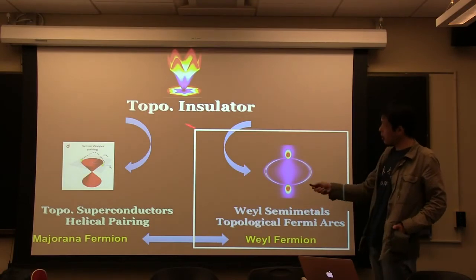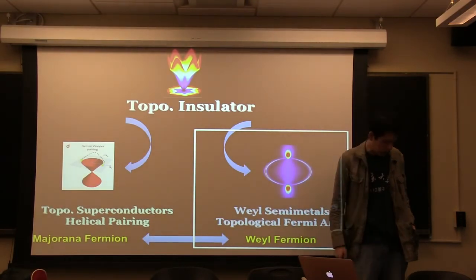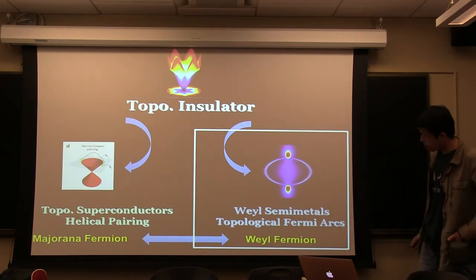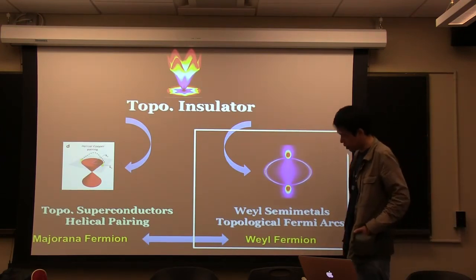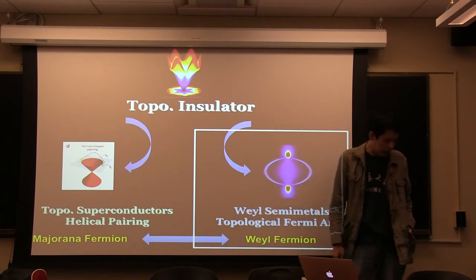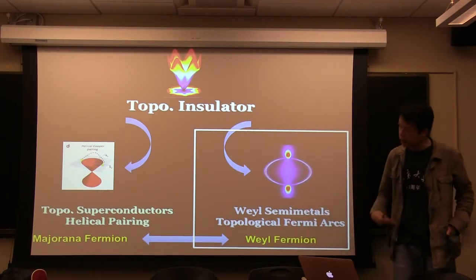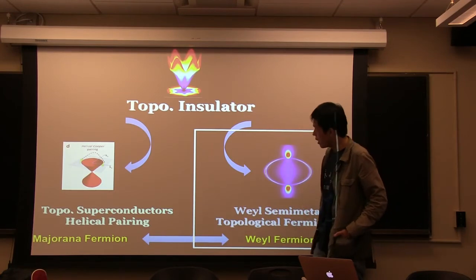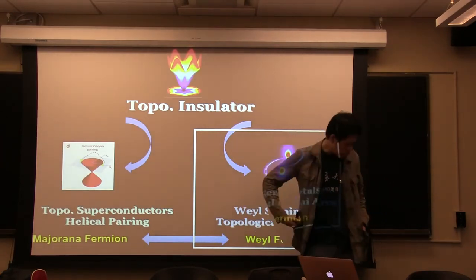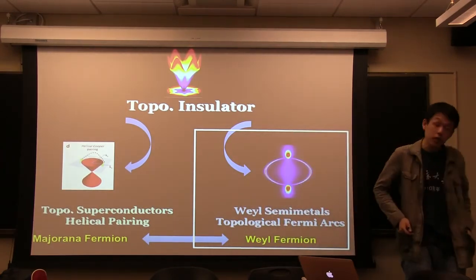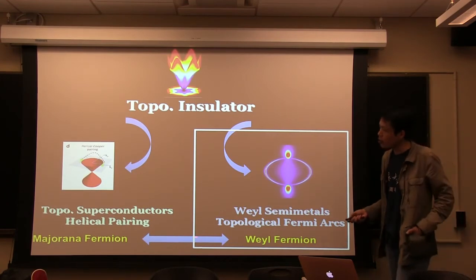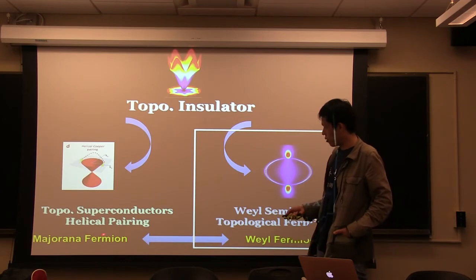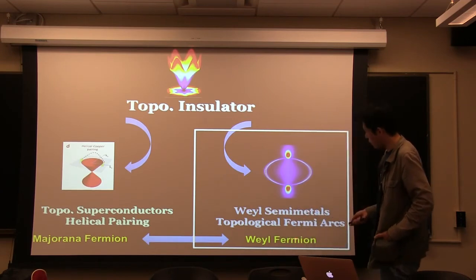Topological insulators in 3D were discovered around 2007 and 2008, and it is now well known that on the surface they have Dirac fermions which are spin-momentum locked Dirac particles. In quantum field theory, we know that there are two other types of fundamental fermions: one is a Majorana fermion and the other one is a Weyl fermion.